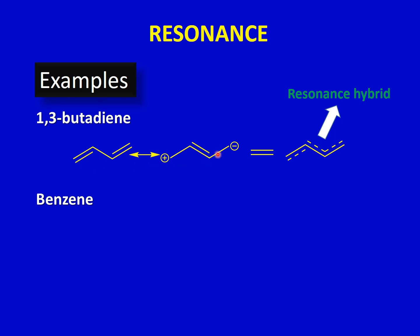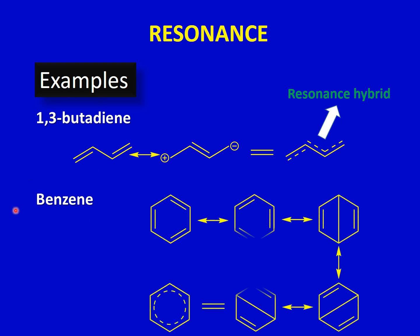These two structures of 1,3-butadiene are not equal, which we will discuss shortly. As another example, we will discuss benzene. Benzene has six carbon atoms and three double bonds. As already explained in the discussion of delocalization in benzene, these double bonds are not localized — they can shift from one place to another. Additionally, benzene has been suggested to have five different contributing structures.